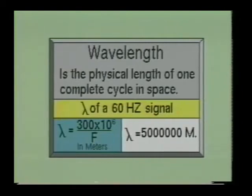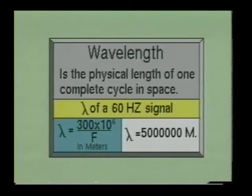The wavelength of a 60 cycle power line would be 300 times 10 to the sixth power divided by 60, or 5 million meters. As you have seen, the lower the frequency, the longer the wavelength; the higher the frequency, the shorter the wavelength.